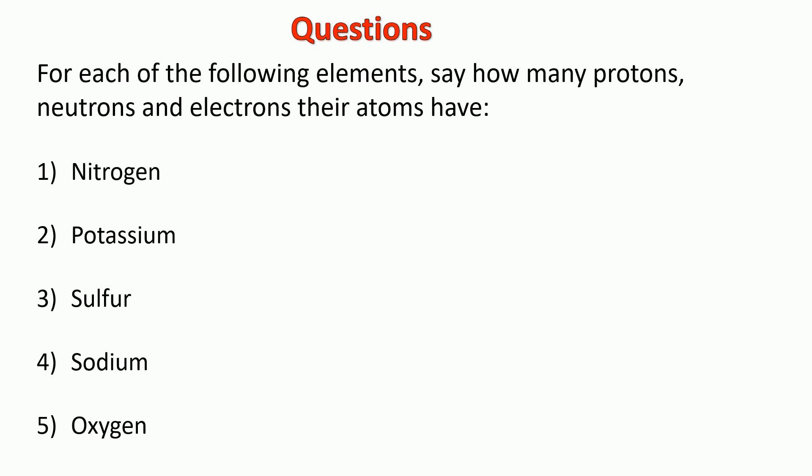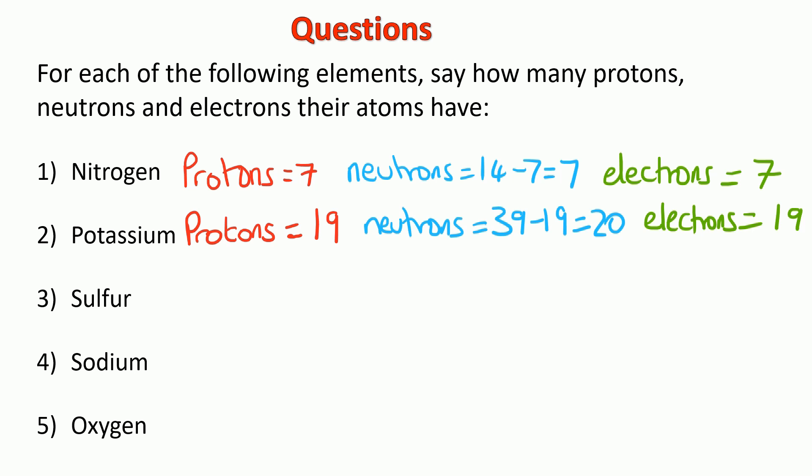So nitrogen has 7 protons because the bottom number is 7. It's got 7 neutrons because we do the mass number take away the atomic number. And it's also got 7 electrons because that's also the bottom number, the atomic number. For potassium, that would work out at 19 protons, 20 neutrons, and 19 electrons.